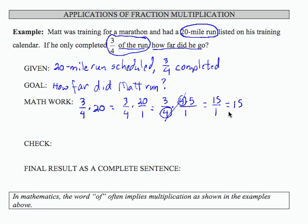So 3 quarters of 20 is 15. Let's see if that makes sense from a little bit more intuitive perspective. And I'm going to put this as my check.